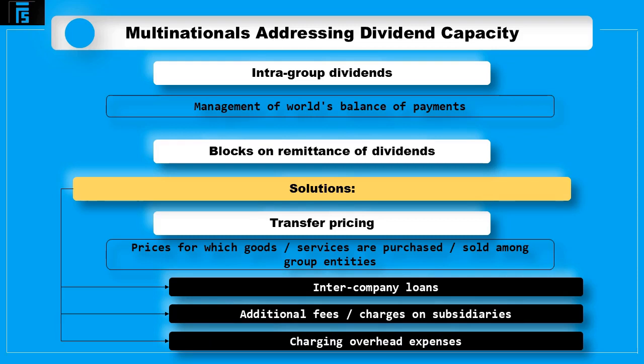Finally, the parent company may also charge its subsidiaries with various overhead expenses. You should appreciate that all of the ways to avoid remittance blocks which we have mentioned are in fact variations of the transfer pricing approach. We will be explaining the issues associated with transfer pricing in more detail in the next video.